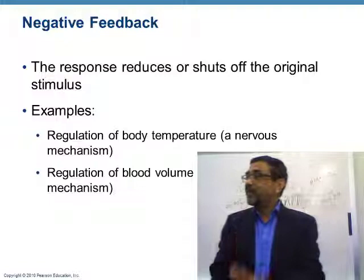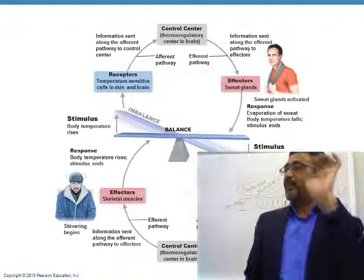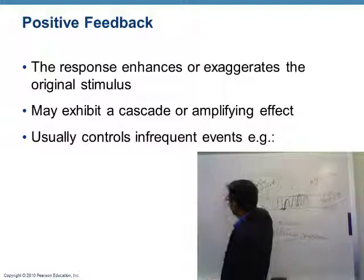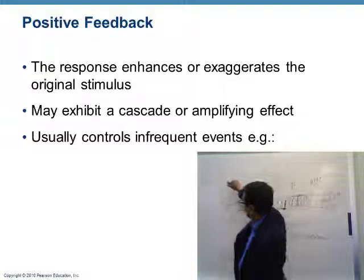In a few cases, positive feedback mechanism works. Positive feedback intensifies the process rather than bringing it back to normal. For example, when you get a cut, platelets get sticky, start attaching to each other, and the clot gradually gets bigger and larger until it seals the cut. The clot is formed by aggregation of platelets — it keeps intensifying until the process is complete.